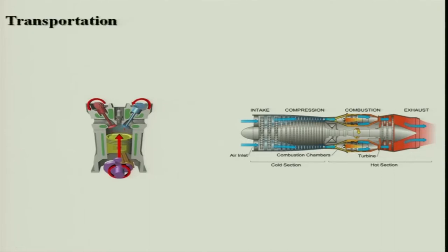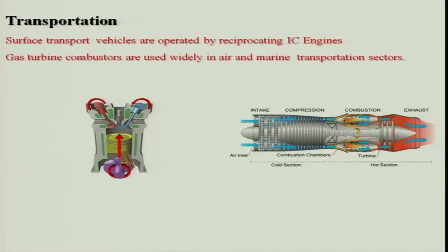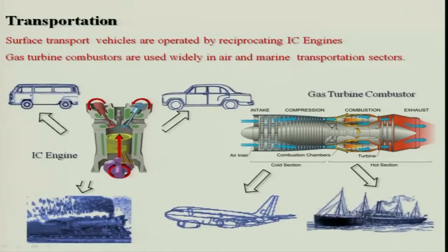Both engines can be used for generating electricity. For transport, surface transport vehicles are operated by reciprocating engines. In western countries, people are using gas turbines for certain trucks. Gas turbine combustors are used widely in air and marine transportation sectors — like cars, other vehicles, locomotives, rail engines, aircraft, ships.